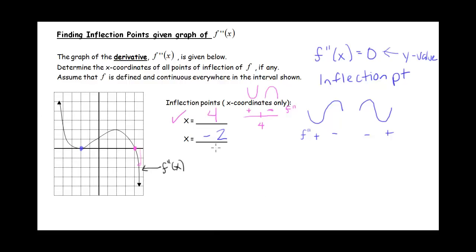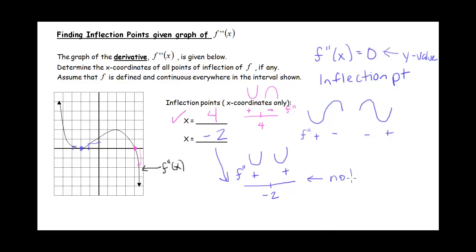Now let's look at x equals negative 2. To the left, the y values on our graph are positive, so the second derivative is positive and our graph is concave up. To the right, we're still positive, so our graph is still concave up. Our graph did not change concavity, so this is not an inflection point — even though the second derivative equals zero there.